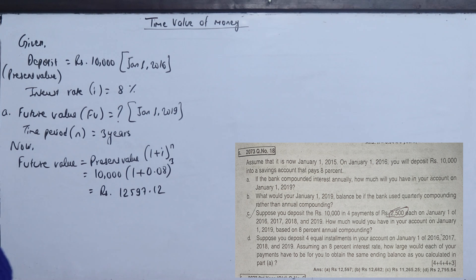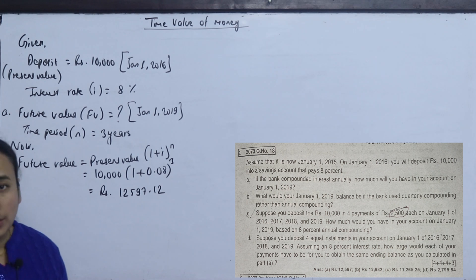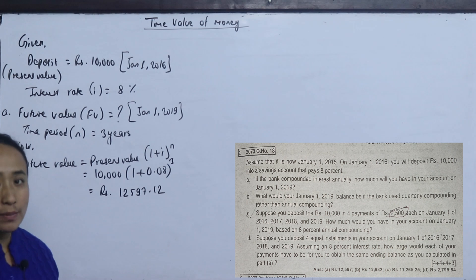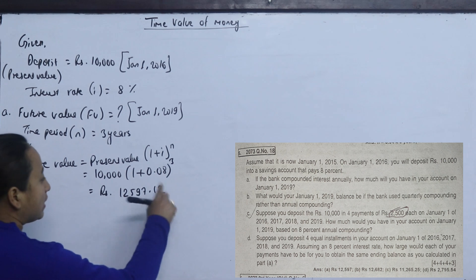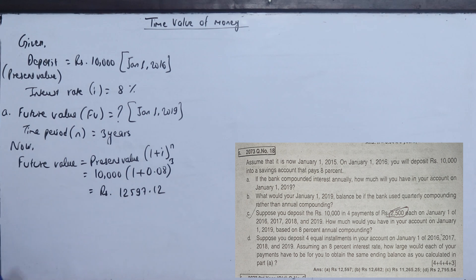In 2016, we have a 10,000 deposit at 8% interest rate for 3 years. In 2019, the value is 12,597.12.